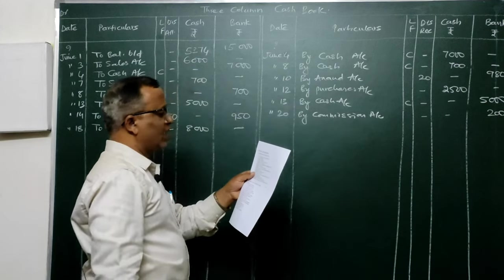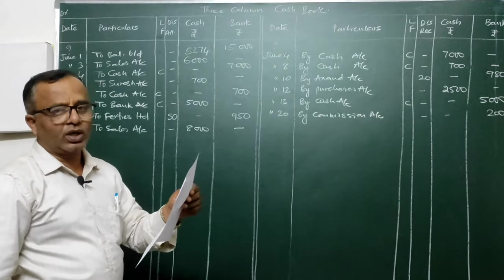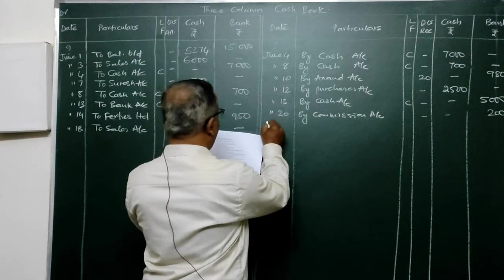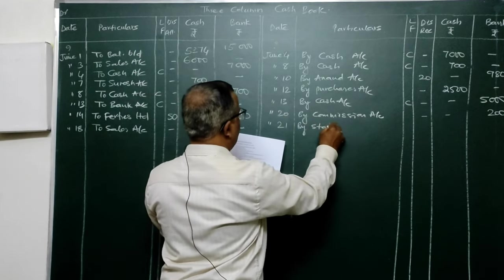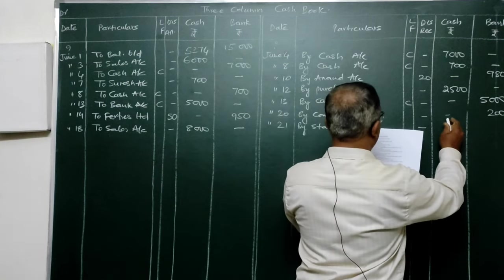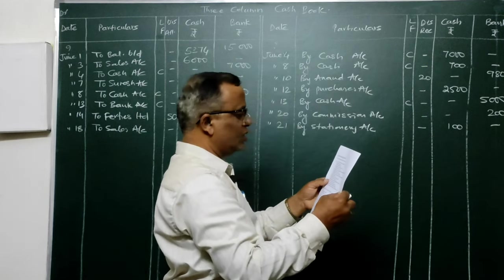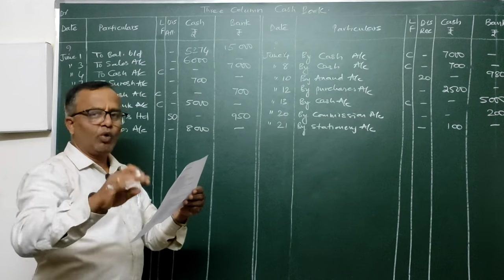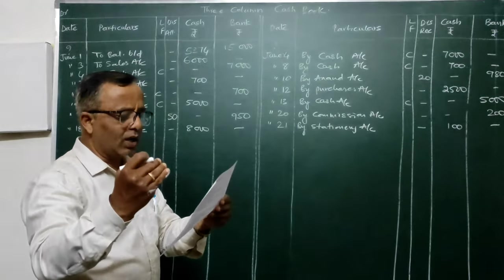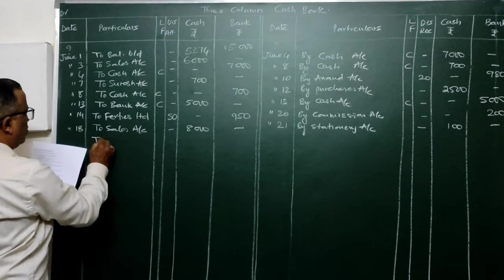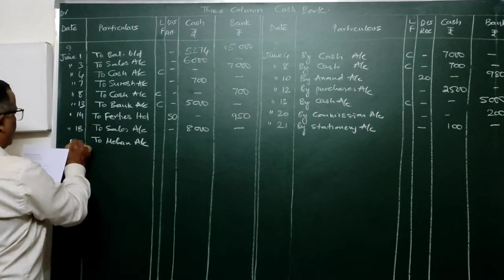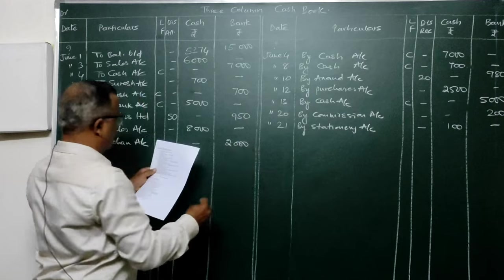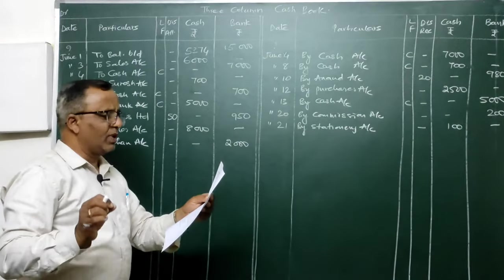On the 23rd: received check for 2,000 from Mohan and paid the same into bank on the same day. Entry: Bank Account Dr. To Mohan Account. Post 2,000 in the bank column. On the 25th: 40s Limited check dishonored. The check received on 14th is now dishonored — it is returned back to 40s Limited, so all postings done on the debit side must be cancelled.